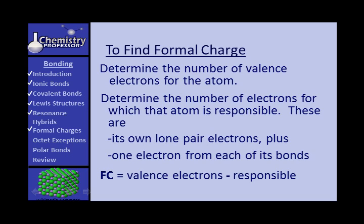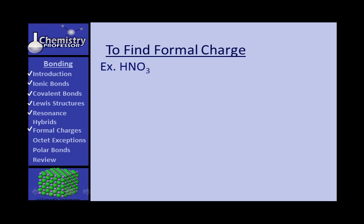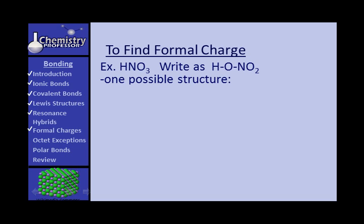You may want to pause and jot all this down. A good example is nitric acid, or HNO3. I want you to write it like this, because when you have these oxy-acids — like nitric, sulfuric, phosphoric, etc. — you're going to find the hydrogen is bonded to the oxygen. Now, here's one possible structure. Nitrogen is your central atom, with the oxygens around it and the hydrogen bonded to one of the oxygens, with the electrons distributed.